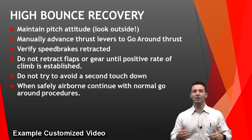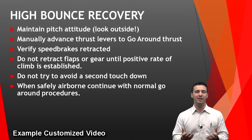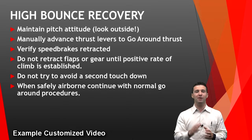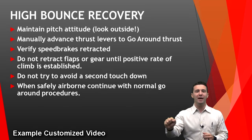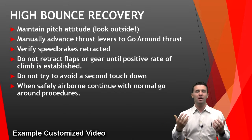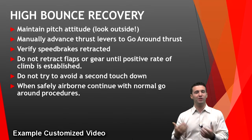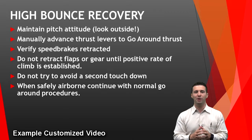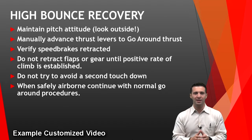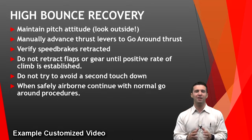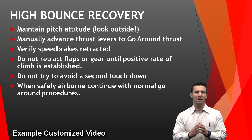The high bounce recovery is a little more involved, and it includes the same step of maintaining pitch attitude by looking outside. We will manually advance thrust levers to go-around thrust — remember, that manual thrust advancement is going to be a lot faster than what the autothrottle servo will advance. We verify that the speed brakes are retracted, and we are certain not to retract flaps or gear until a positive rate of climb is established.